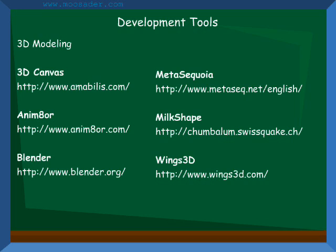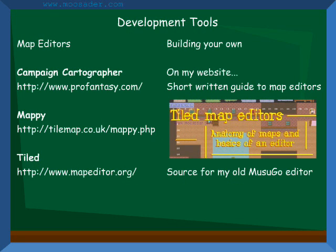Some 3D modeling editors are 3D Canvas, Animator, Blender, Meta Sequoia, Milk Shape, and Wings 3D. Some map editors you can use are Campaign Cartographer, Mappy, and Tiled. I have a map editor as well called Moosigo, but it's kind of crappy. When I have time I'm going to be making a new map editor in Java, but if you want to write your own map editor, you might find stepping through the Moosigo code helpful. I also have a small guide on my website for creating tiled map editors.